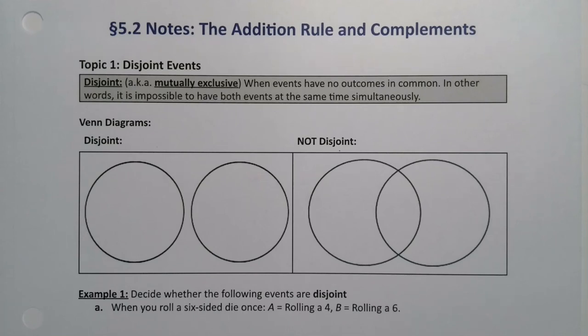Now that we've learned the basics of probability, it's time to expand our repertoire of probability rules so that we can start finding some more complicated probabilities than we did in section 5.1. And we're going to begin with the addition rule and complements. Before we can get into the addition rule and complements, we need to first study a definition, which is disjoint events.